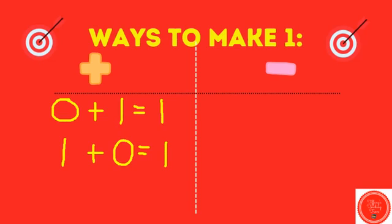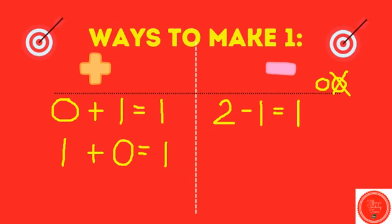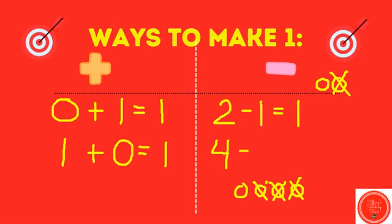Let's go to subtraction. What if I give you the number two? How many do I have to take away to get to one? I have to take away one. Two minus one equals one, which is our target. What if we start with four? How many do I have to take away from four? I'm going to cross out until I have only one left. How many did I have to cross out? Three. Four minus three equals one.